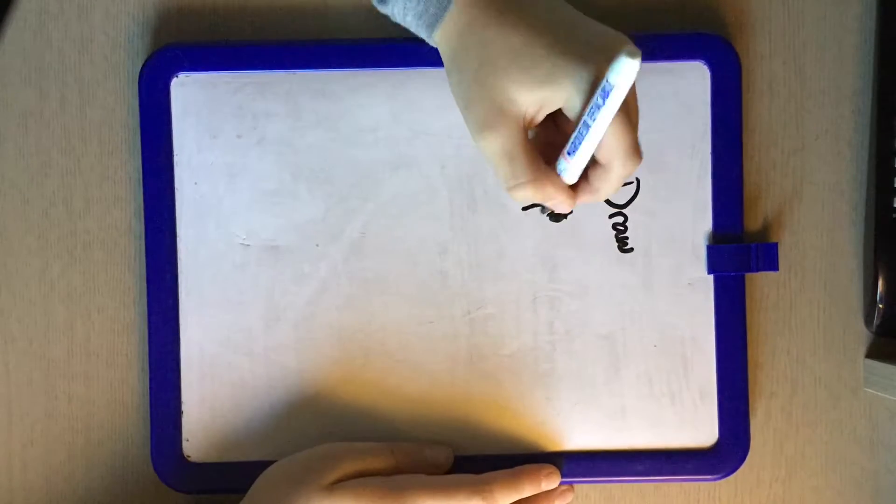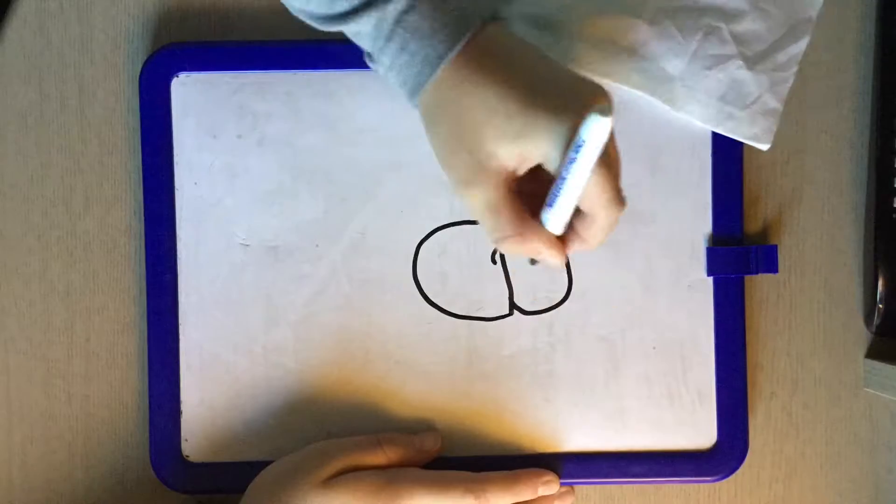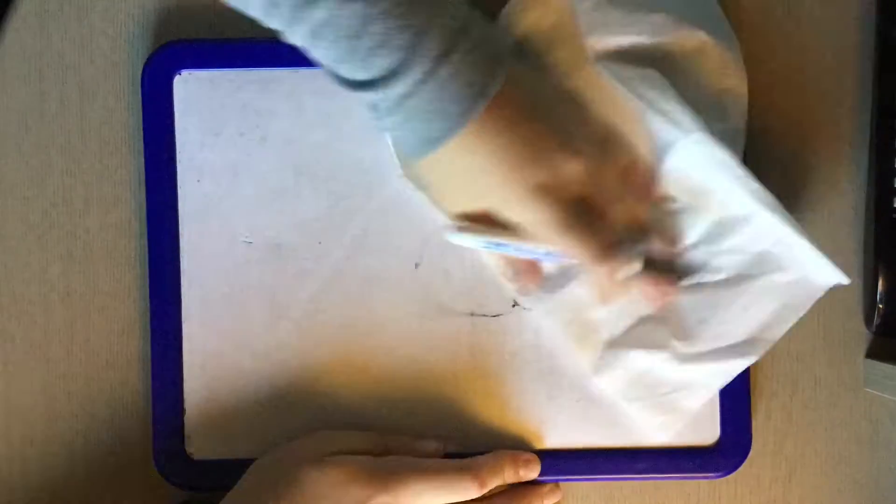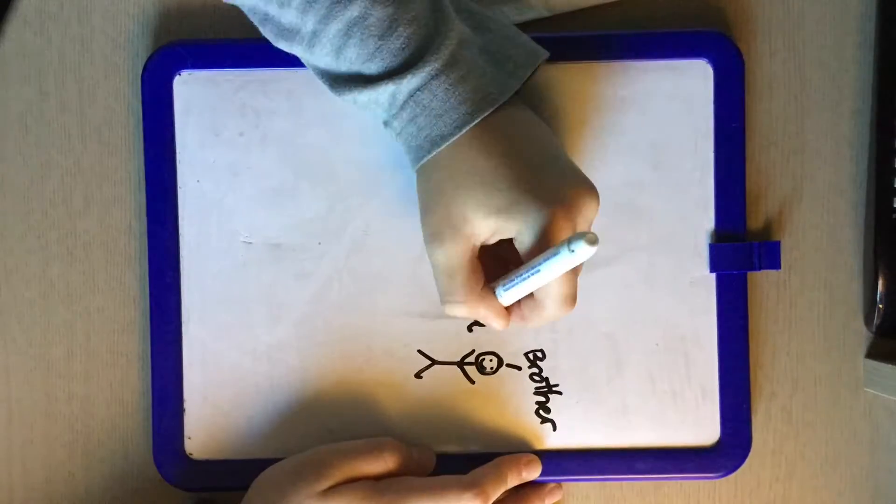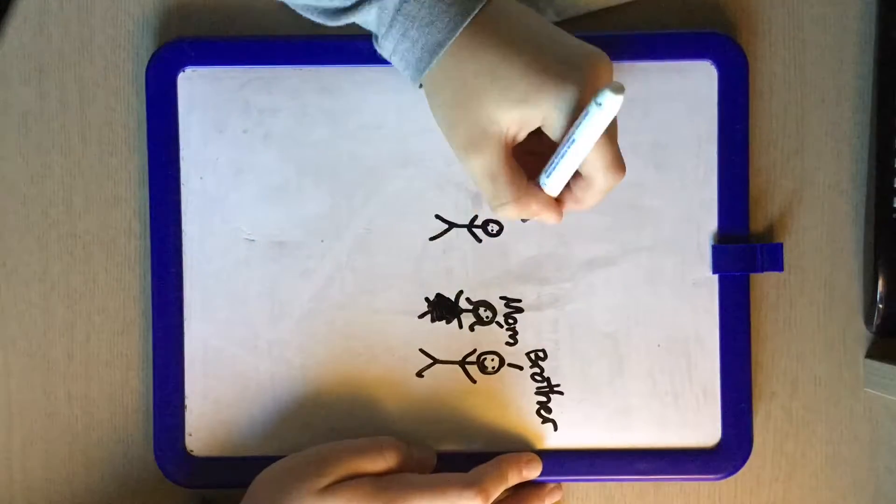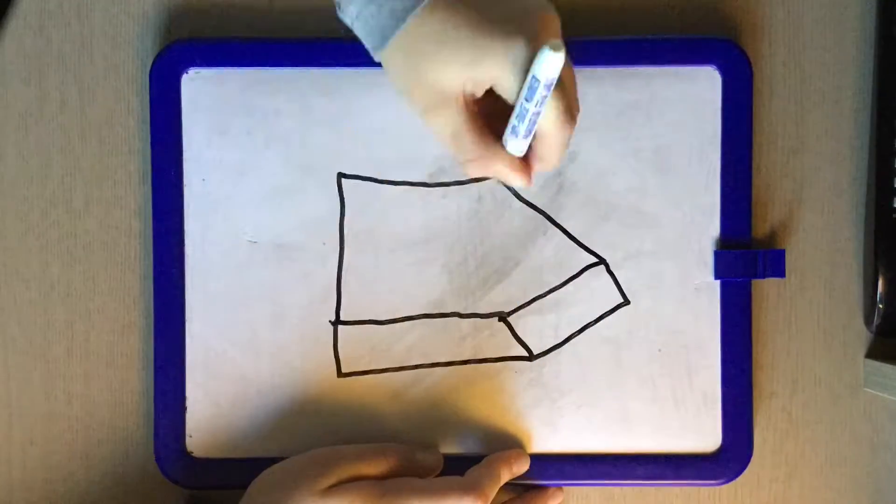Welcome everyone, this is a Draw My Life from PandaVlogs2. It all started when I was a baby. We had a family - my brother, my mother, my dad, and me. We had a beautiful two-story house and I had lots of friends.